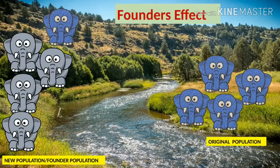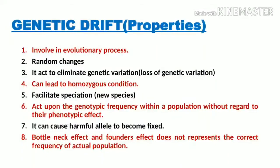Now let's see the most important properties of genetic drift. I kept this slide for the end of this video because before understanding bottleneck effect and founder's effect, we couldn't fully understand these properties. The first property: genetic drift is involved in the evolutionary process, because whenever there is a reduction in population, it gives rise to different characters and a different type of population, directly or indirectly playing a role in evolution.